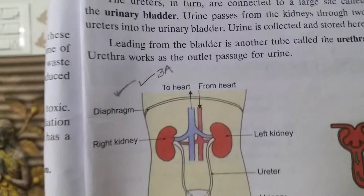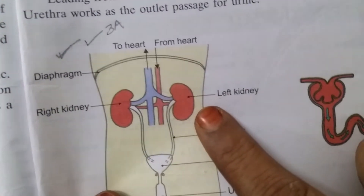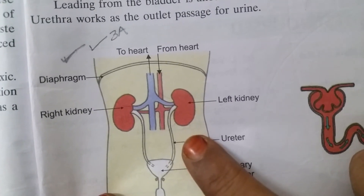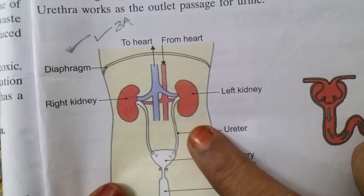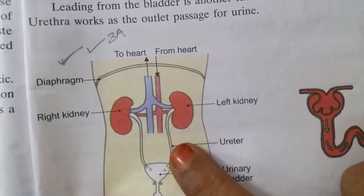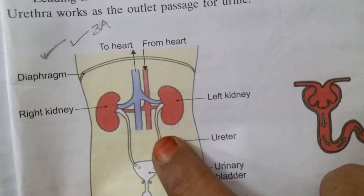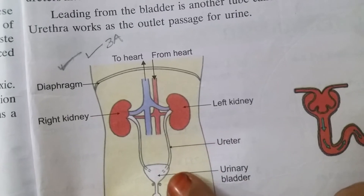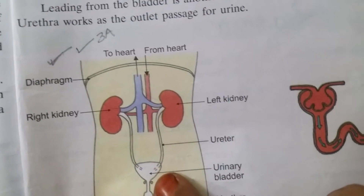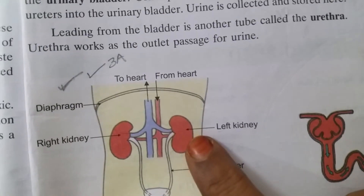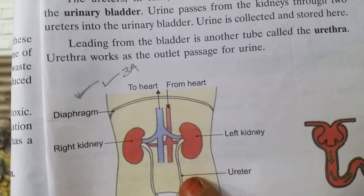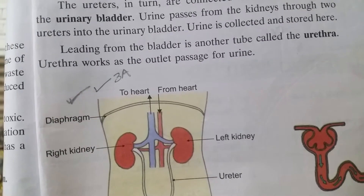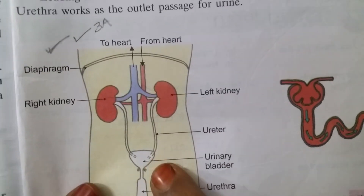These two red bean-shaped structures are called kidneys. These are ureters — a narrow tube called the ureter runs from the inner side of each kidney. The ureters in turn are connected to a large sac called the urinary bladder. Urine passes from the kidneys through the ureters into the urinary bladder, where it is collected and stored.